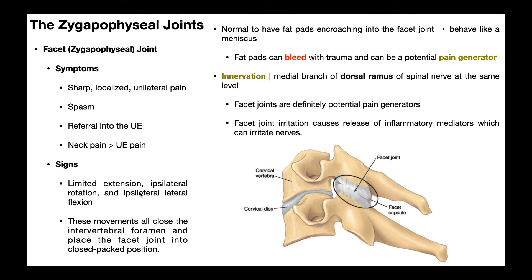Now for the signs of facet joint dysfunction — these are straightforward when you understand them rather than just memorize them. Consider the movements of the spine: flexion, extension, lateral flexion, and rotation. When you go into flexion, the facet joint actually opens up — the inferior and superior articular facets move further apart. Flexion, bending the neck forward, separates the facet joints. Extension does the opposite — bending the head backward causes the articular surfaces to approximate, so the joint actually closes.